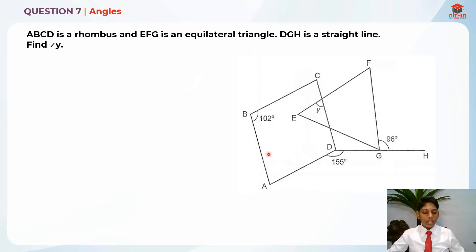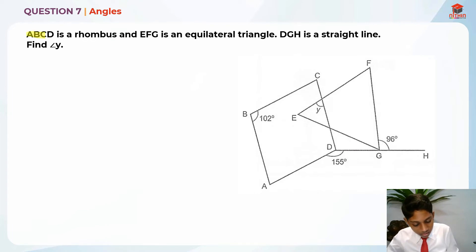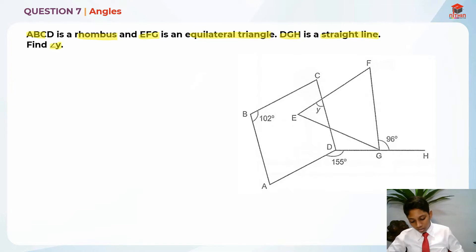Question 7 is testing us on angles. Let's read the question first. ABCD is a rhombus. EFG is an equilateral triangle. DGH is a straight line. Find angle Y.